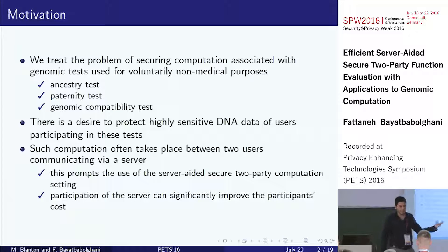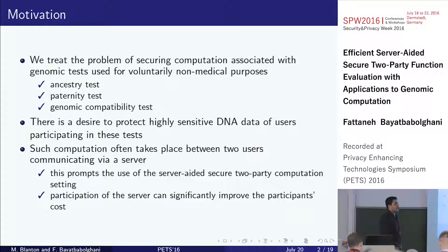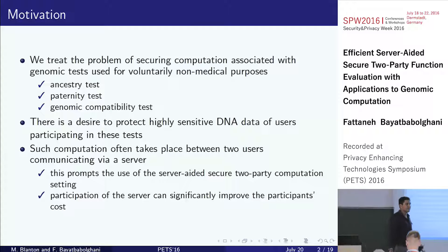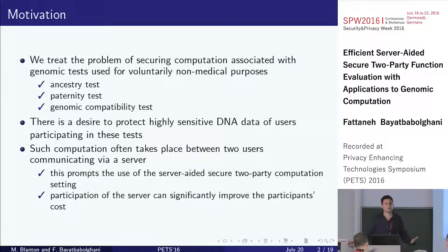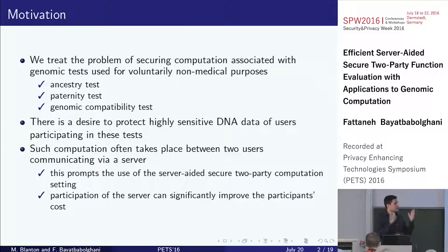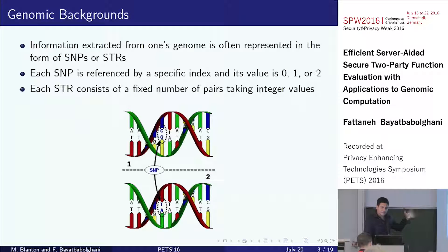The assumption here is that at least one of the parties is quite weak — computationally and communication-wise. Let's say Alice: she doesn't want to participate too much. So when coming up with a solution, you have to make sure you're not putting too much burden on at least one of them, and you try to leverage the aided server as much as you can.